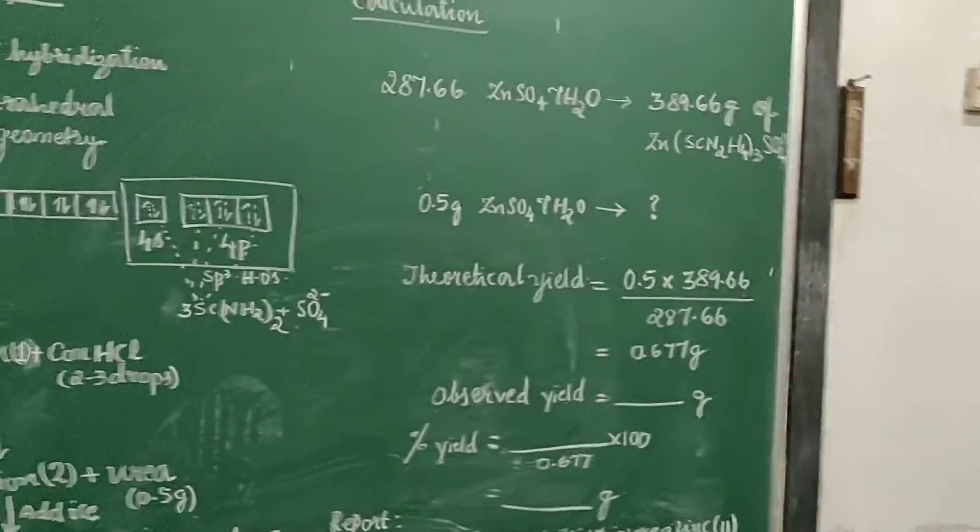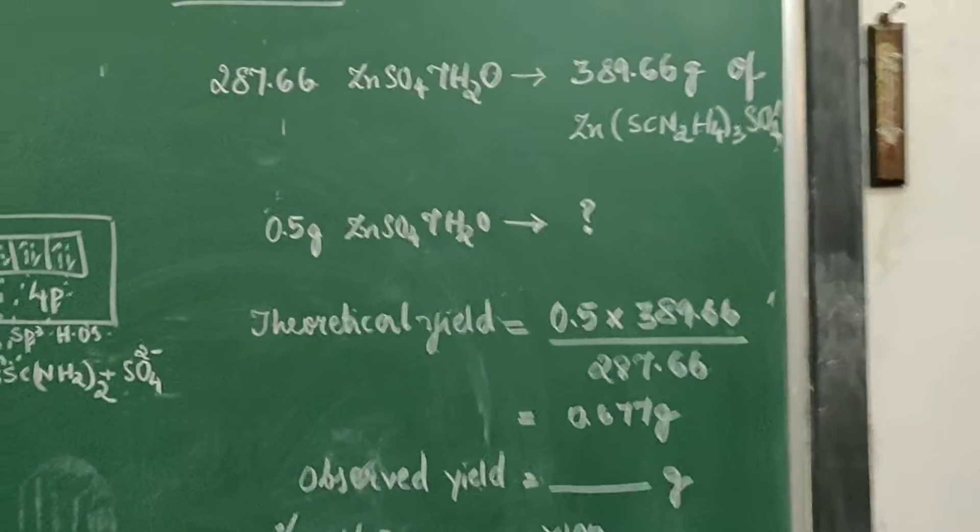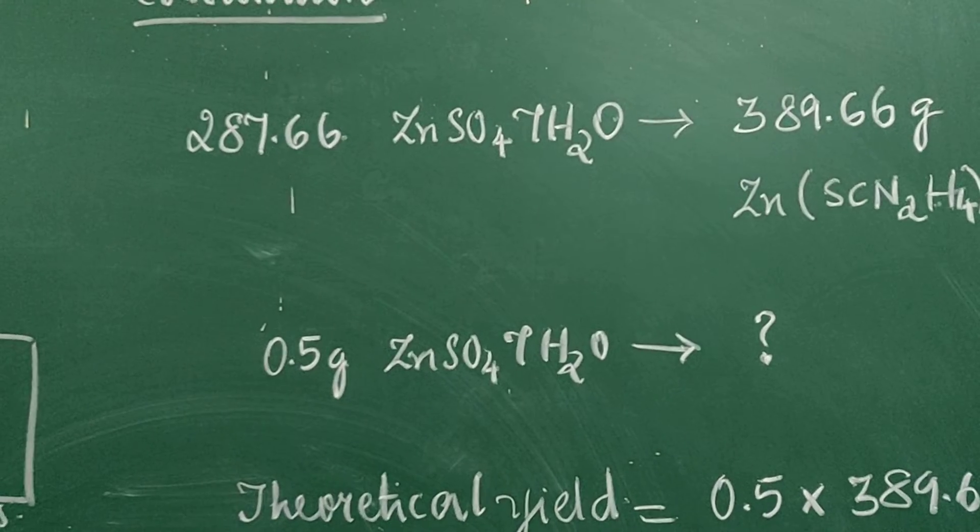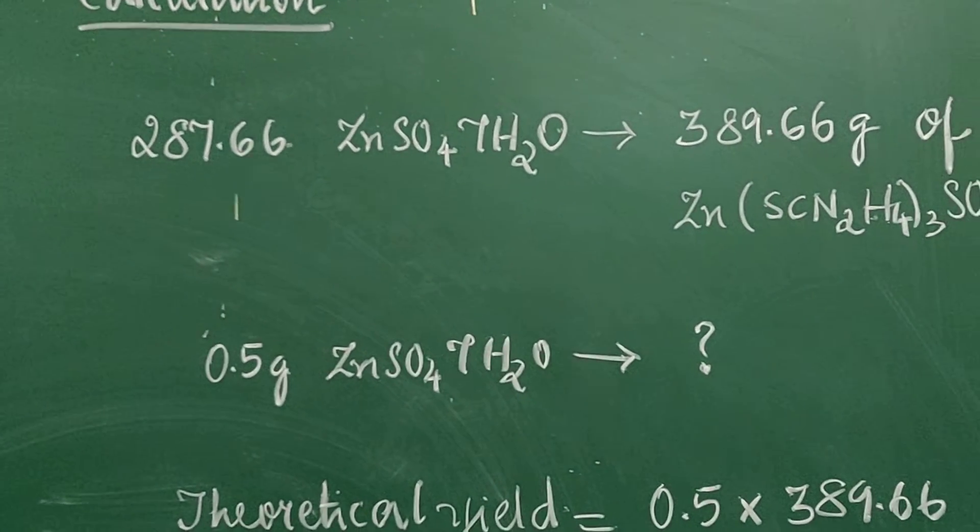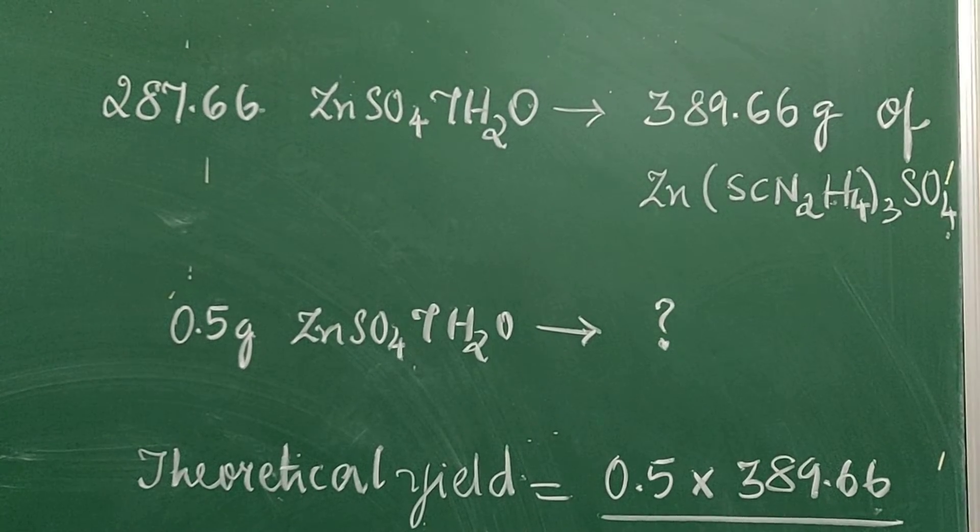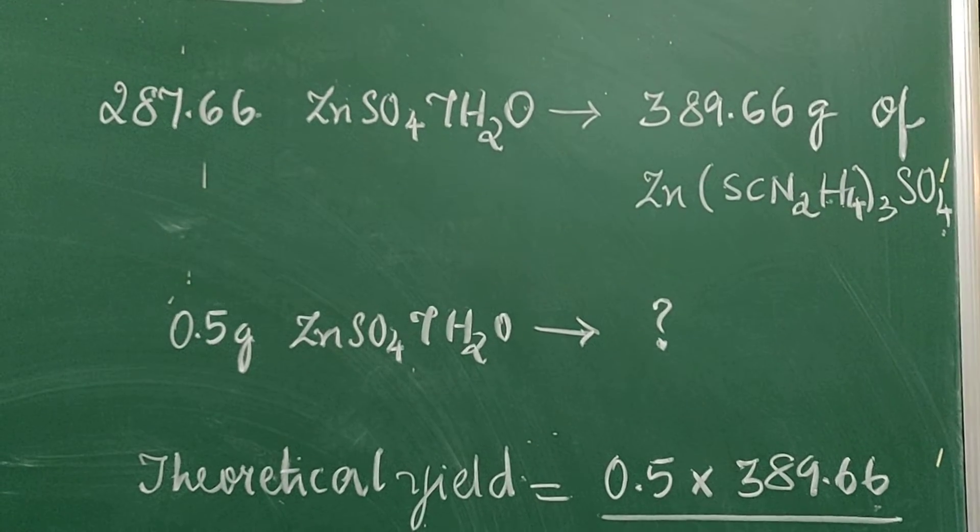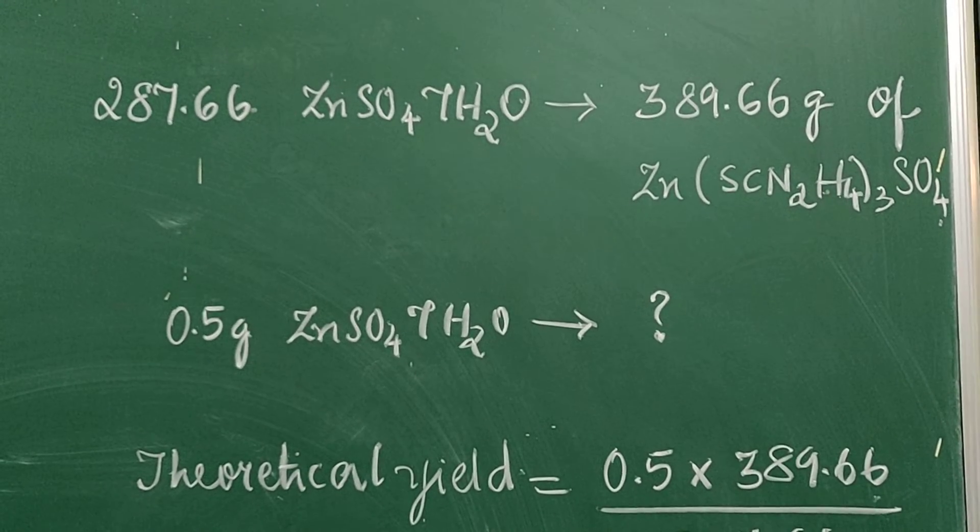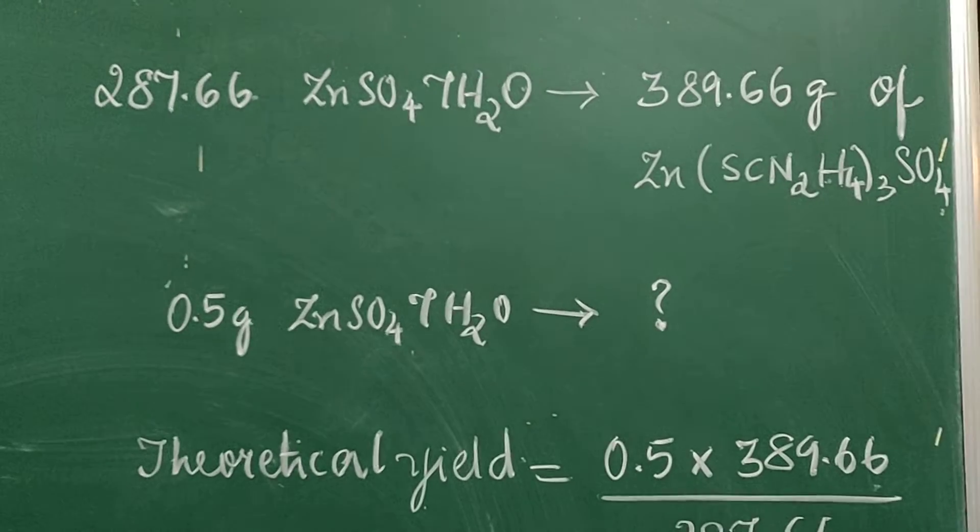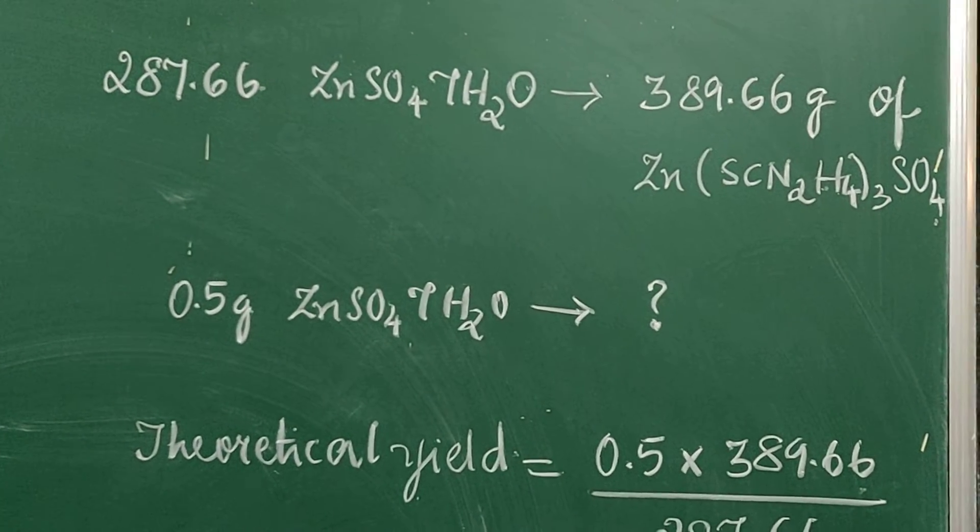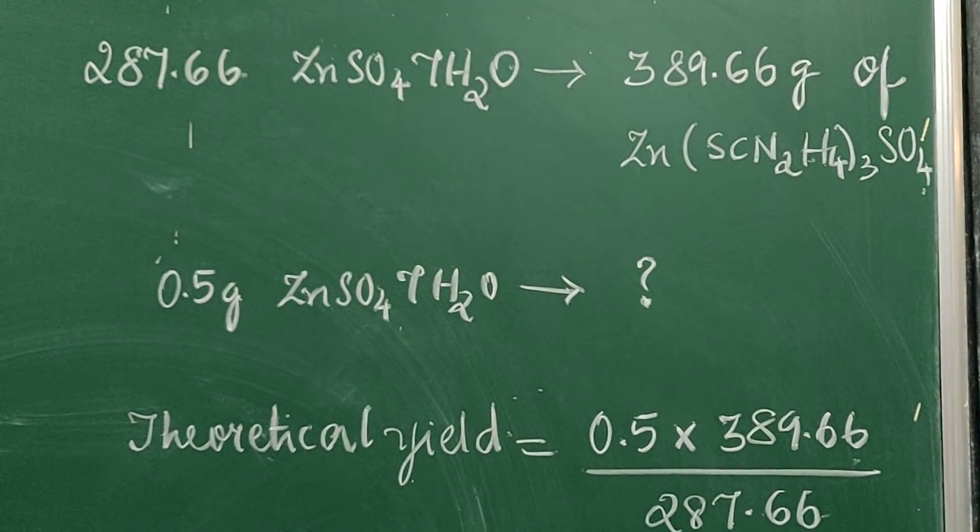Coming to the calculation part, we have the molecular weight of the complex is 287.66. If we were to take one molecular weight of zinc sulfate to prepare the complex which is 389.66 grams, that is 287 will give you 389 grams of the complex.